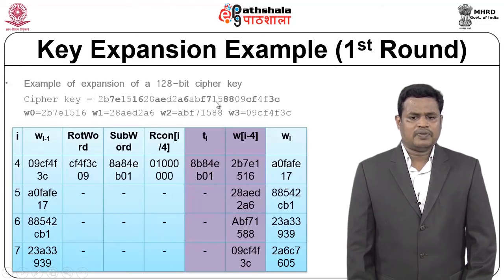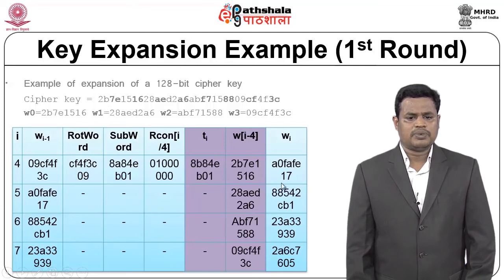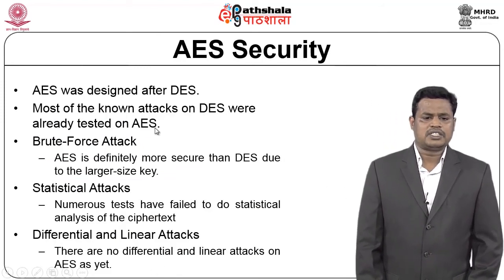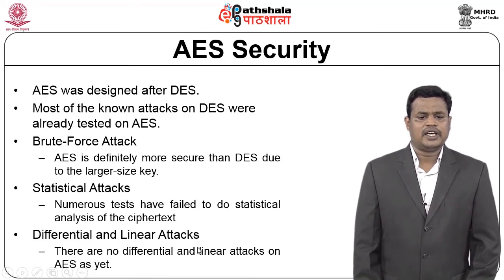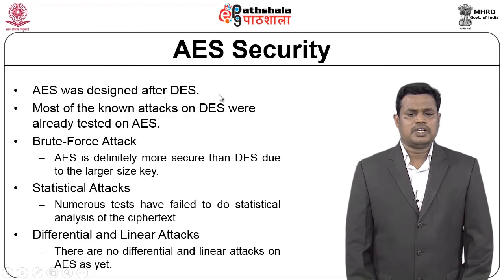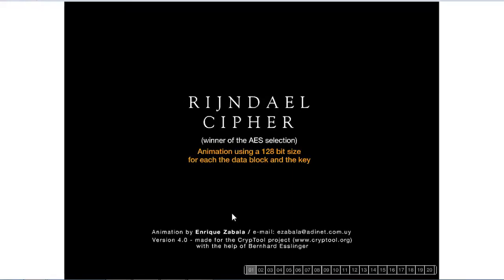Here is an example for the first round: w0 undergoes rotate word, substitution byte, round constant is added, giving T4, and a new word is generated. AES was designed after most known attacks were already tested against it — brute force, statistical attacks, differential and linear attacks. There are no successful differential or linear attacks against AES to date, which is why most applications still use the Advanced Encryption Standard for encryption.